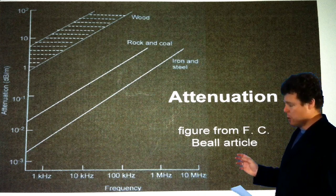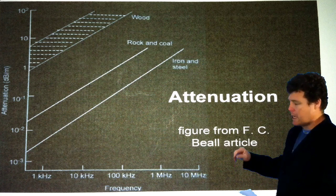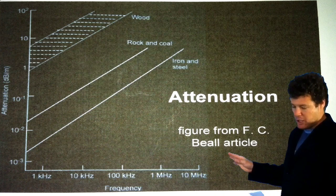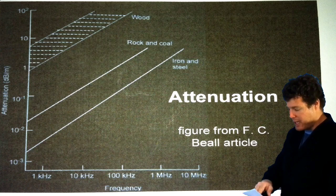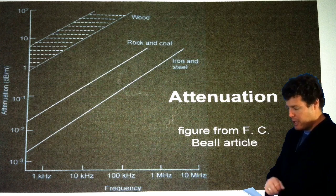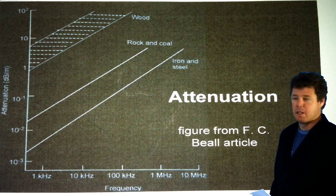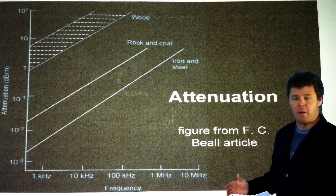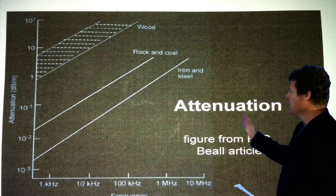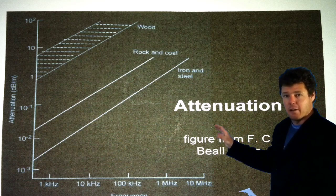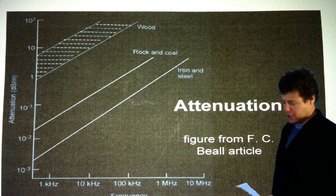If you have a look at the area below 1 kHz, the attenuation is around 1 dB per metre. And then if you have a look at around the 10 kHz mark, it approaches 10 dB per metre. So it indicates that the higher the frequency, the greater the attenuation. It also indicates that the denser the material, the lower the attenuation actually is.